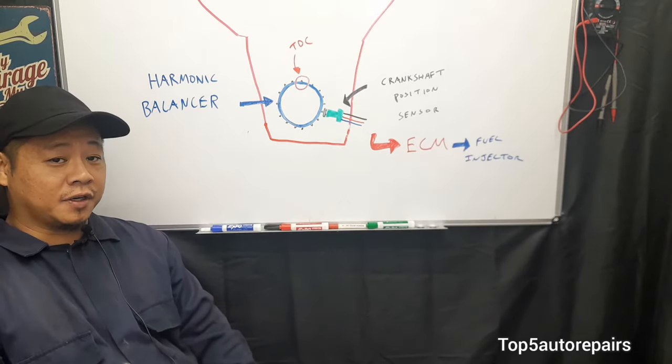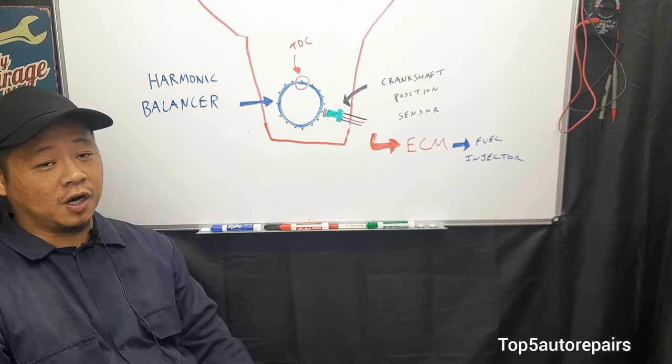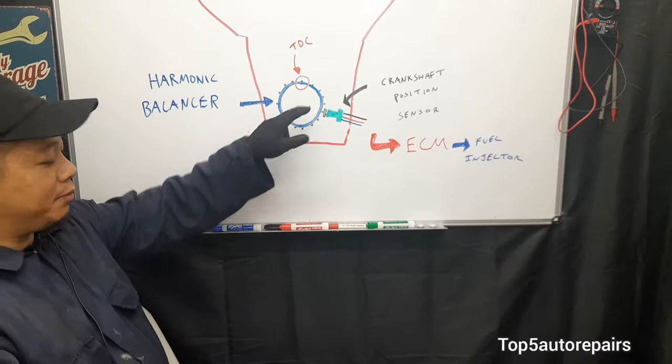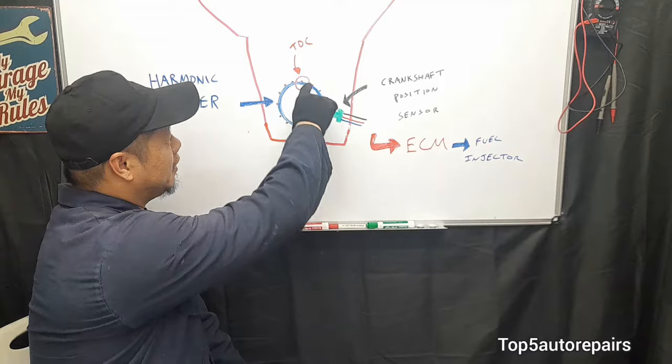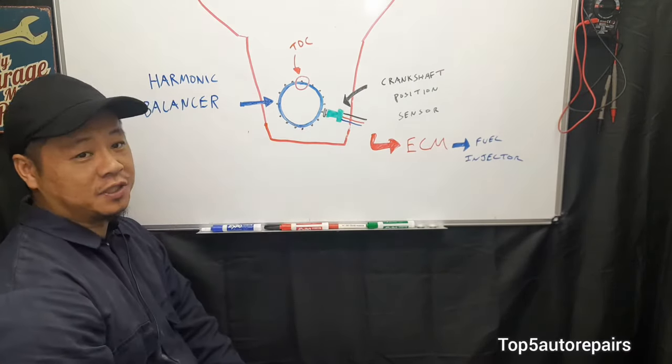The reason your vehicle stalls, especially when you're driving, is because the signal gets cut off. For example, this is the crankshaft position sensor and this is your harmonic balancer. As you can see here, it's a reluctor as well. Each of these teeth here represents a position.